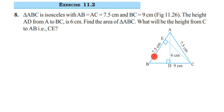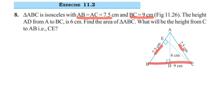We have to find CE. They have given both equal sides of the isosceles triangle which are 7.5 cm, one height which is AD, and also the base of the triangle which is BC equal to 9 cm.